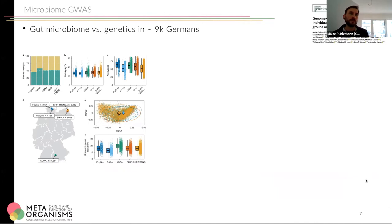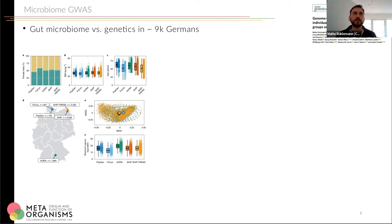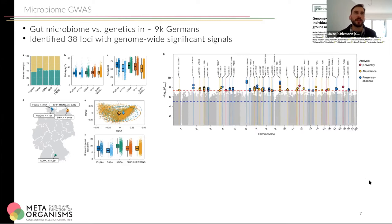Briefly about the microbiome GWAS: we looked at associations between specific genetic markers in the human genome and the presence, absence, abundance, and community composition of the gut microbiome in almost 9,000 German individuals from three different sites — one in northern Germany, one in northeastern Germany, and one in southern Germany. We identified 38 loci — genomic points — where we find at least genome-wide significant signals, which could identify candidates of host-microbiome interactions.